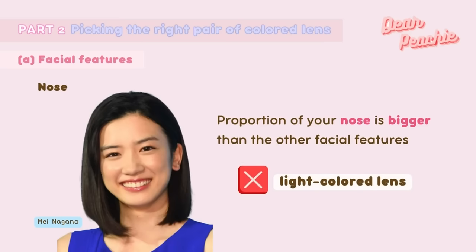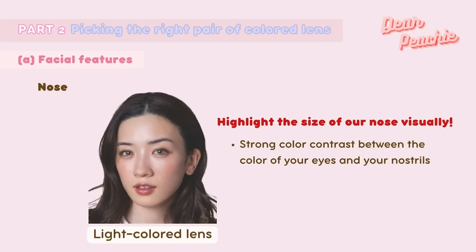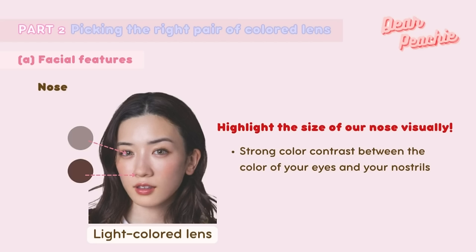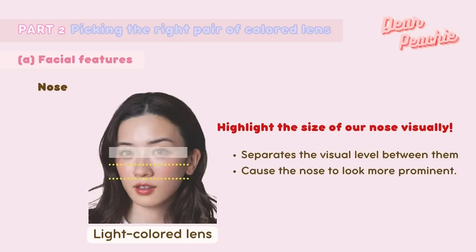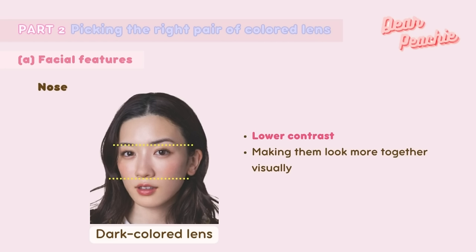Let's start with the nose. If your nose is proportionally bigger than your other facial features, stay away from light colored lenses. Wearing light versus dark colored lenses gives different visual impact. According to Chinese beauty experts, light colored lenses tend to highlight the size of your nose visually because they create a strong color contrast between your eyes and nostrils, separating the visual levels and making the nose look more prominent. Dark colored lenses, with closer color tone to the nostrils, lower the contrast and make features look more together.